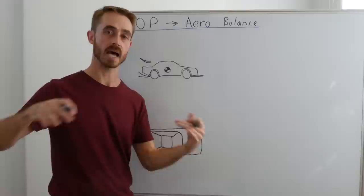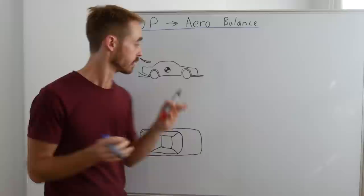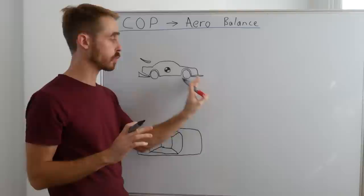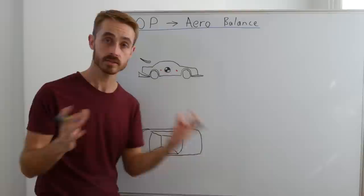Now we have multiple centers of pressure, but the one that people are most familiar with is the front-rear center of pressure. So if you imagine we have more front downforce, our center of pressure would be located here. If we have more rear downforce, it'd be located here. It's just the center of the average of the downforce.